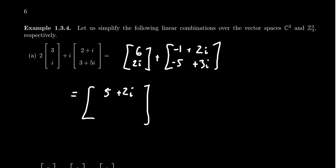For the second component, there's no real part on the first one. So you're just going to get a negative 5 there. And then for the imaginary part, you get 2i plus 3i, which is a 5i.